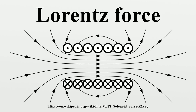History: Early attempts to quantitatively describe the electromagnetic force were made in the mid-18th century. It was proposed that the force on magnetic poles, by Johann Tobias Mayer and others in 1760, and electrically charged objects, by Henry Cavendish in 1762, obeyed an inverse square law. However, in both cases the experimental proof was neither complete nor conclusive. Soon after the discovery in 1820 by H.C. Ørsted that a magnetic needle is acted on by a voltaic current, André-Marie Ampère that same year was able to devise through experimentation the formula for the angular dependence of the force between two current elements. In all these descriptions, the force was always given in terms of the properties of the objects involved and the distances between them, rather than in terms of electric and magnetic fields.